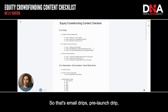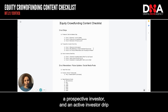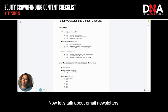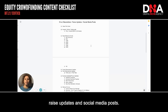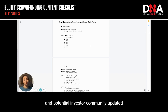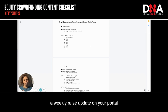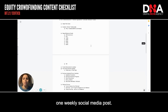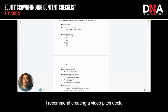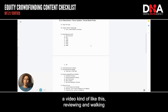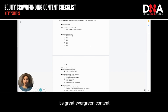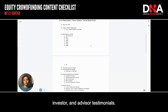So that's email drips — a pre-launch drip, a prospective investor drip, and an active investor drip when you go live. Now let's talk about email newsletters, raise updates, and social media posts. On a weekly basis, you should keep your investor community and potential investor community updated on the campaign. You should send a weekly newsletter, a weekly raise update on your portal, and at minimum be posting one weekly social media post. I recommend creating a video pitch deck — a video walking investors through your pitch deck — as great evergreen content.